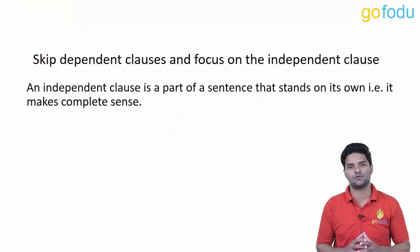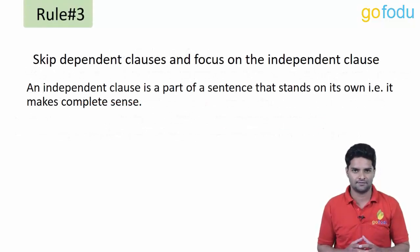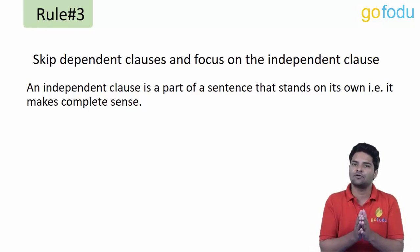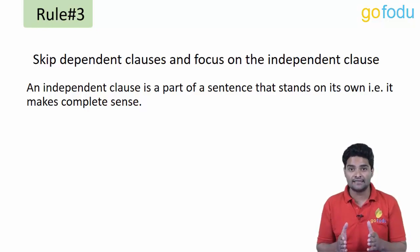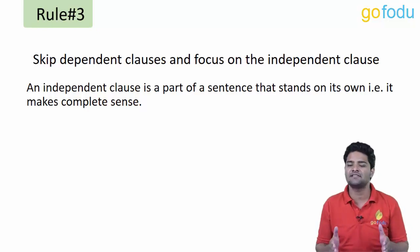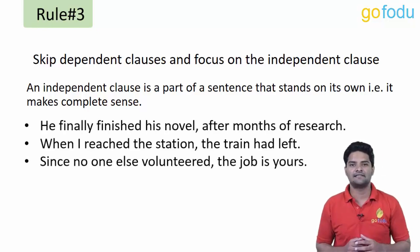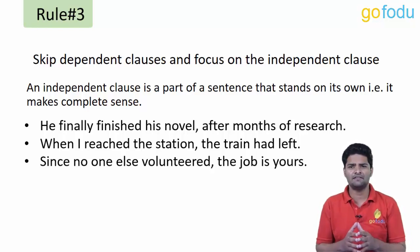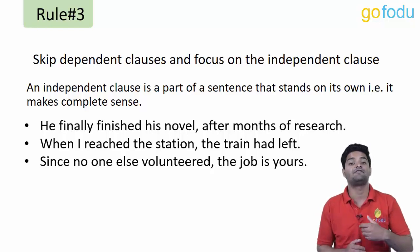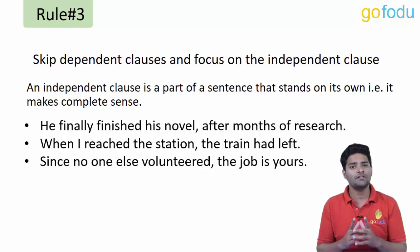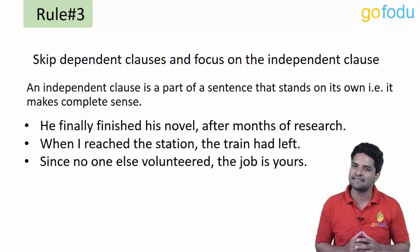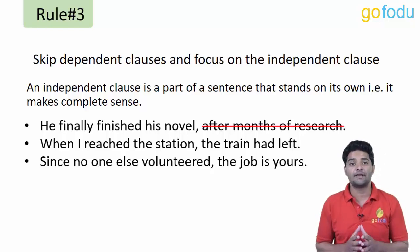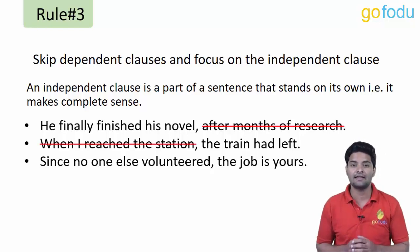We can skip dependent clauses and focus only on the independent clause. An independent clause can stand on its own and makes complete sense, whereas a dependent clause does not. For example: 'He finally finished his novel after months of research' — 'he finally finished his novel' is the independent clause, while 'after months of research' is the dependent clause and is just extra info which we can skip. Similarly, clauses like 'when I reach the station' and 'since no one else volunteered' can be skipped.